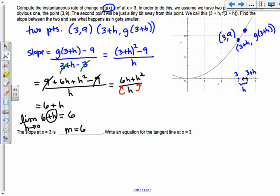The slope at x = 3 is 6. Write an equation for the tangent line at 3. Your point is 3, 9. You have the slope, you have the point. This is point-slope form: y - y₁ = m(x - x₁). So 6 times (x - 3) = y - 9. Leave it like that.